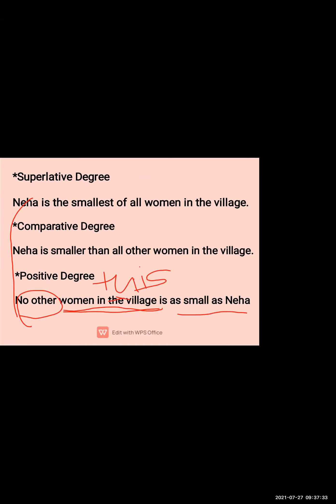No other — these are the new words added at the start. Then the rest part of the sentence: 'woman in the village'. Then the positive form degree: 'is as small as Neha' — where Neha is our subject. This is the method for how to write in a positive degree.